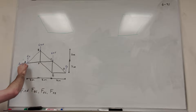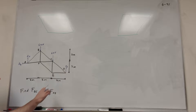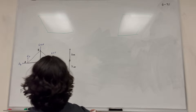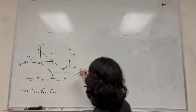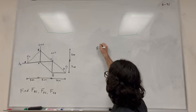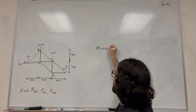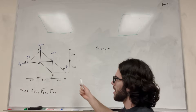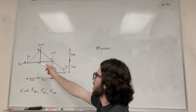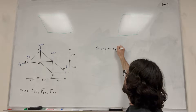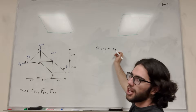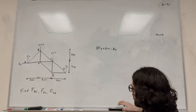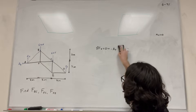So we need to find AY, AX, and DY. Let's start with the easiest one — A of X. We can start with the sum of the forces in the X direction. We know it's equal to zero because this is at equilibrium. Looking at all the external forces, the only thing we have is A of X, so minus A of X. That just tells us that A of X is equal to zero.